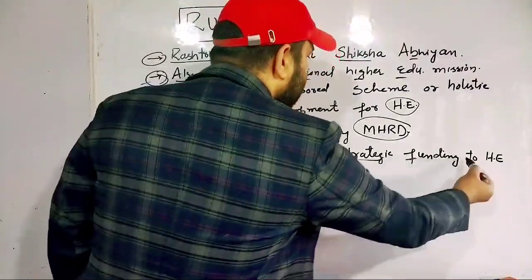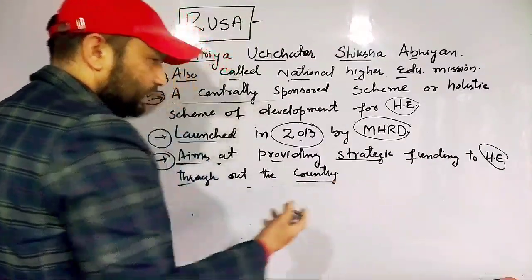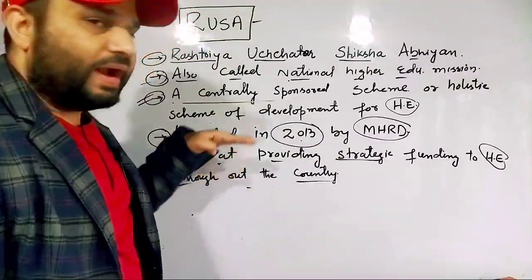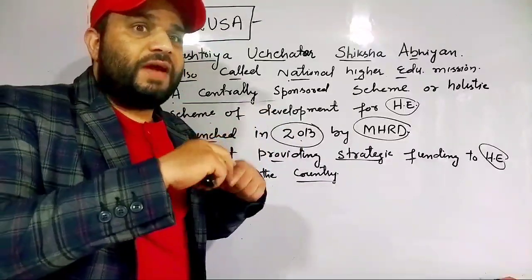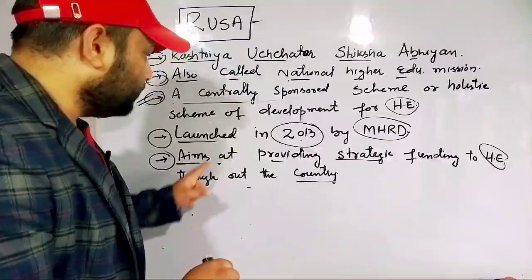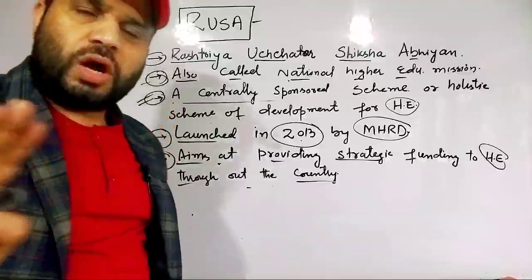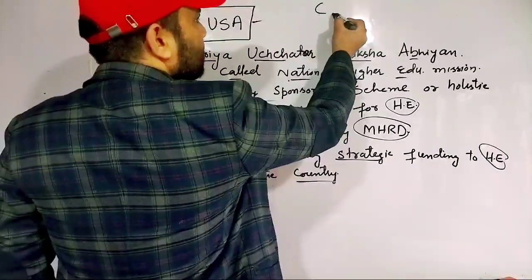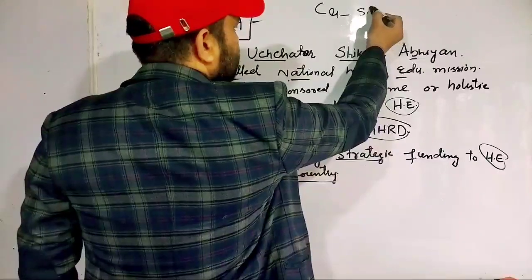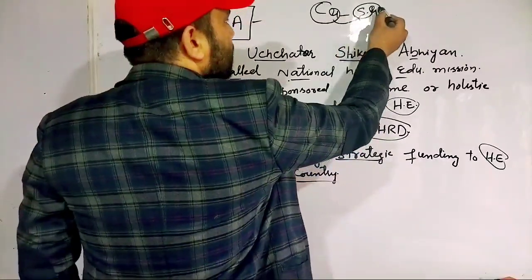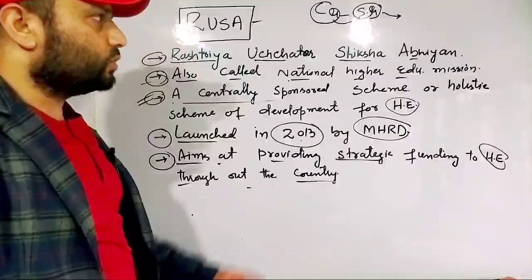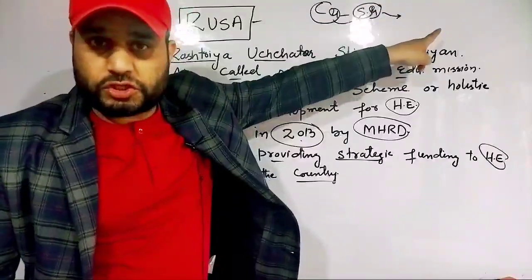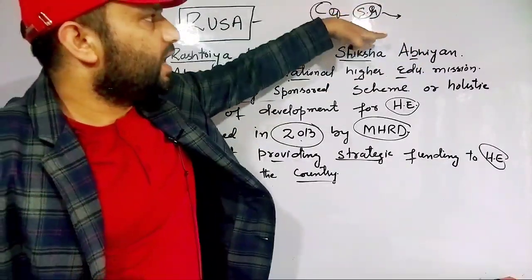RUSA aims at providing strategic funding to higher education throughout the country. The aim — maksud — of RUSA is to provide well-planned, strategic funding to higher education. The funding flow works like this: central government provides funds to state government, and then the state government provides it to the higher education department. So the funding flows from central government to state government and then to higher education institutions.